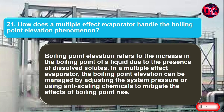How does a multiple effect evaporator handle the boiling point elevation phenomenon? Boiling point elevation refers to the increase in the boiling point of a liquid due to the presence of dissolved solutes. In a multiple effect evaporator, boiling point elevation can be managed by adjusting the system pressure or using anti-scaling chemicals to mitigate the effects of boiling point rise.